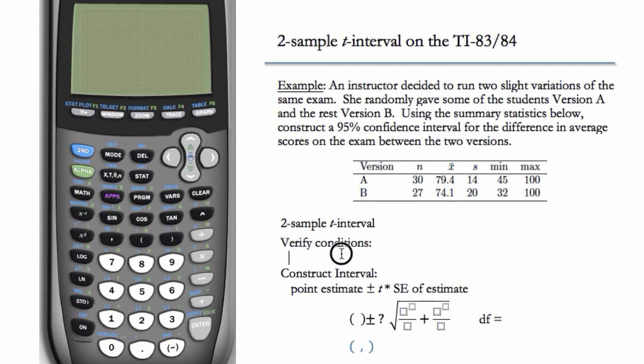So first, let's verify conditions. We have that N sub A is equal to 30 and this is greater than or equal to 30. N sub B is almost 30, so we could consider that okay.